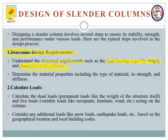The next consideration is material properties — the type of material, its strength and stiffness — whether we are going for a completely steel column, an RC column, or a composite column. We need to determine the type of material, the strength that can be expected from it, and the stiffness parameter of that particular column.